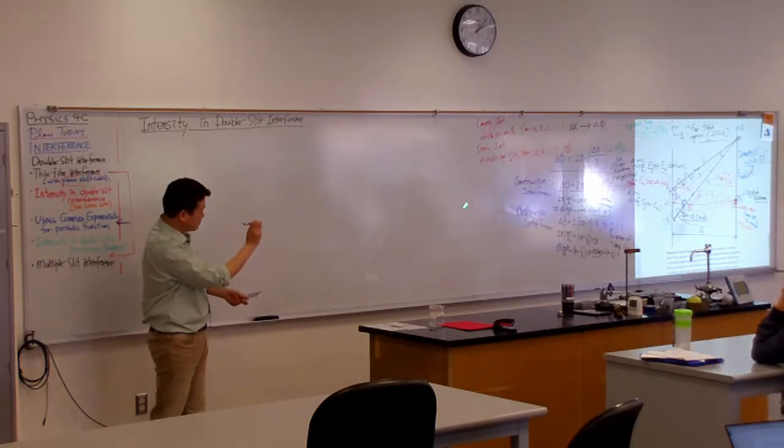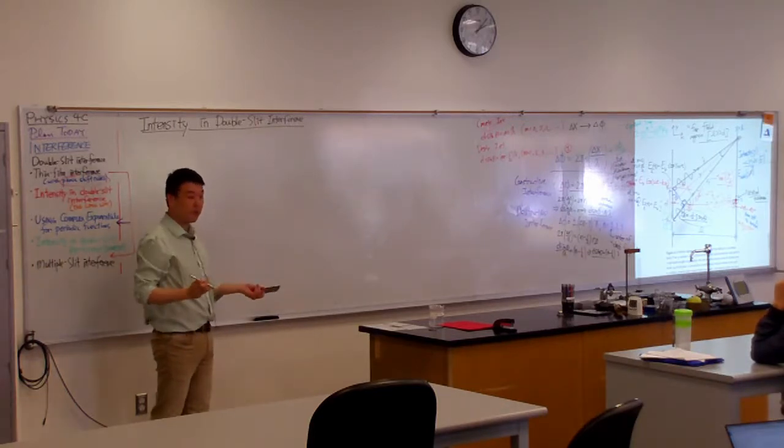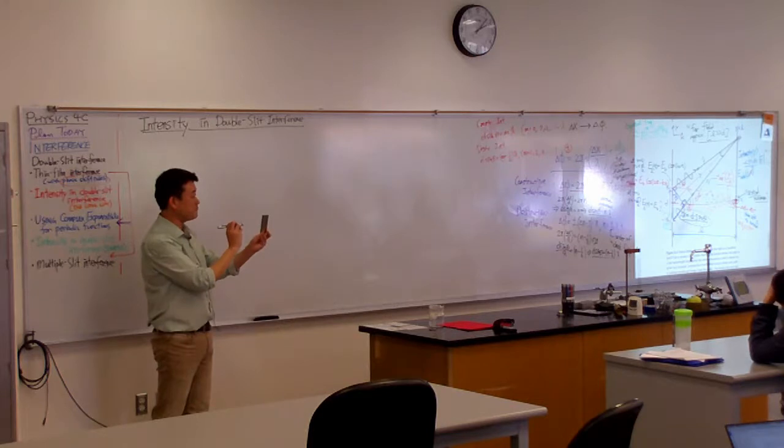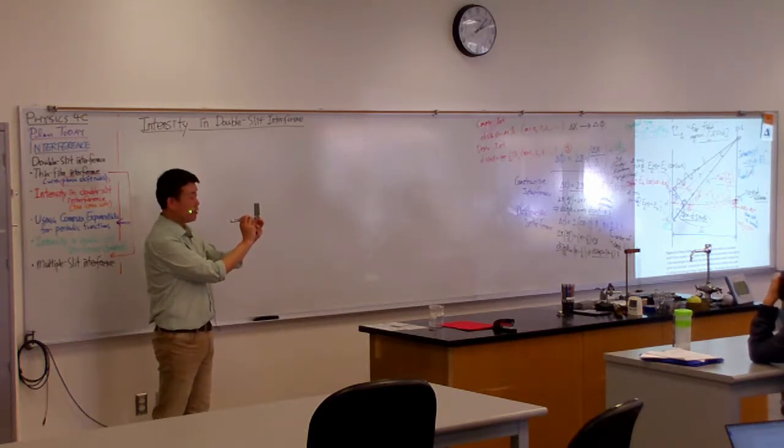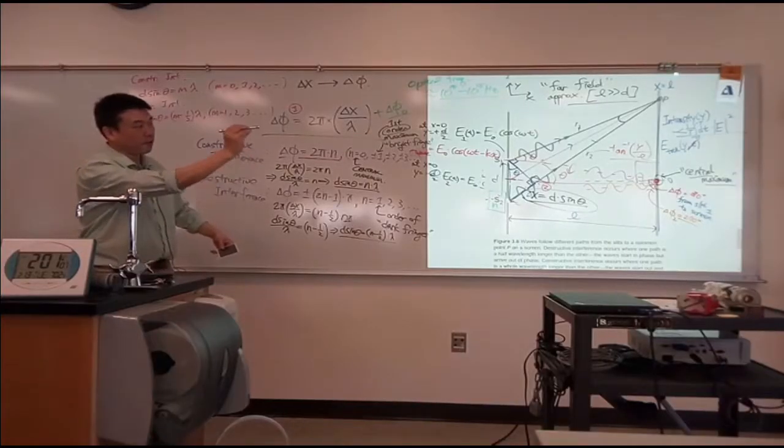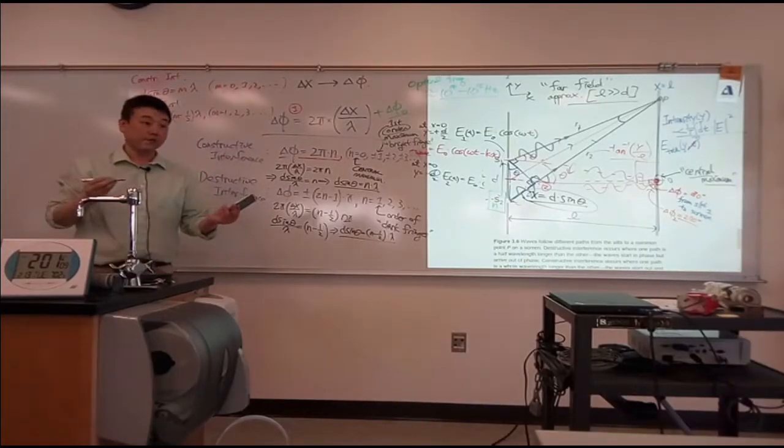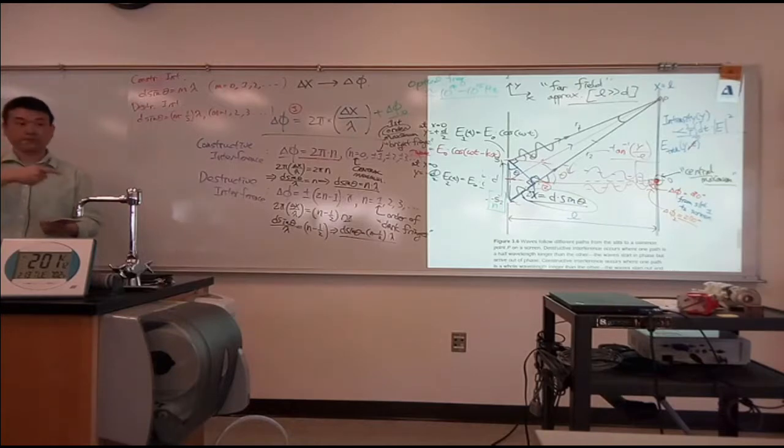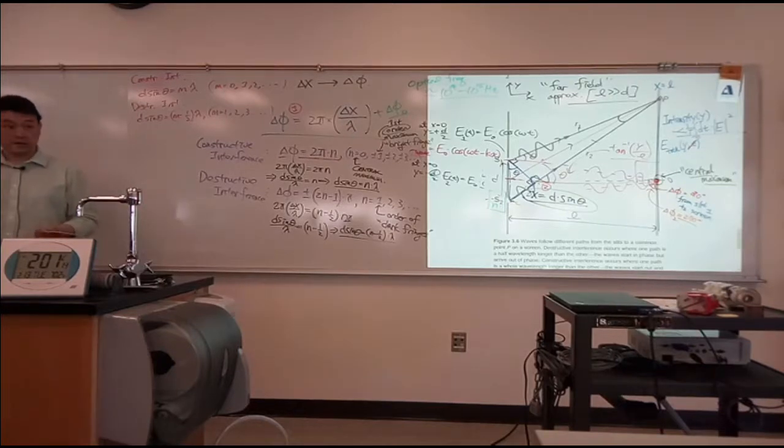And with this simple consideration, you have enough to say where those fringes are. You have enough to describe the angular position, or using this relationship, convert it to the y positions. You have enough information to describe where the bright fringes are and where the dark fringes are.